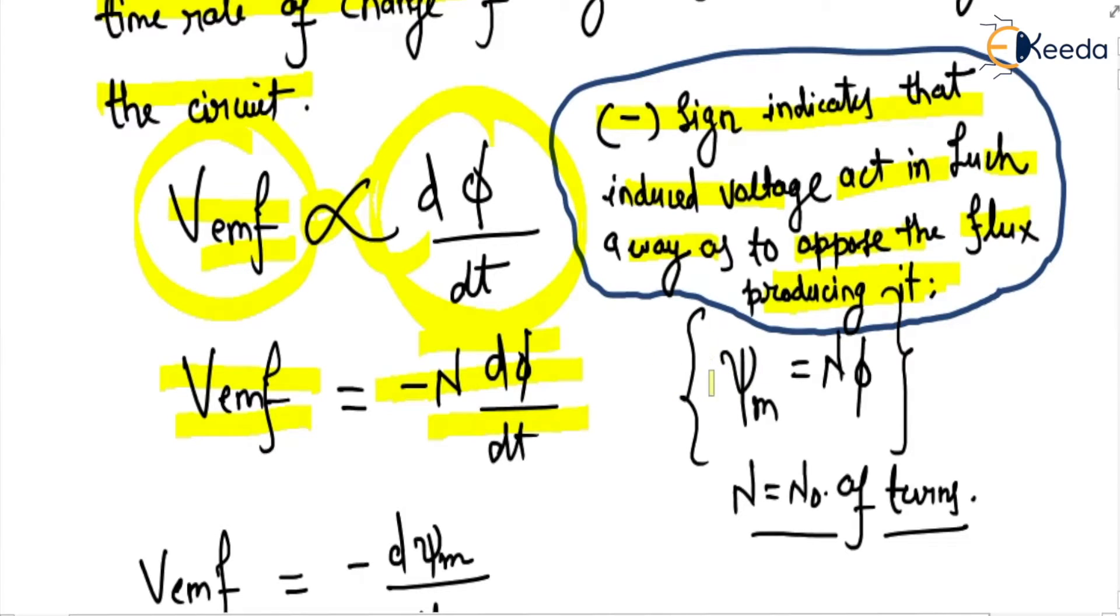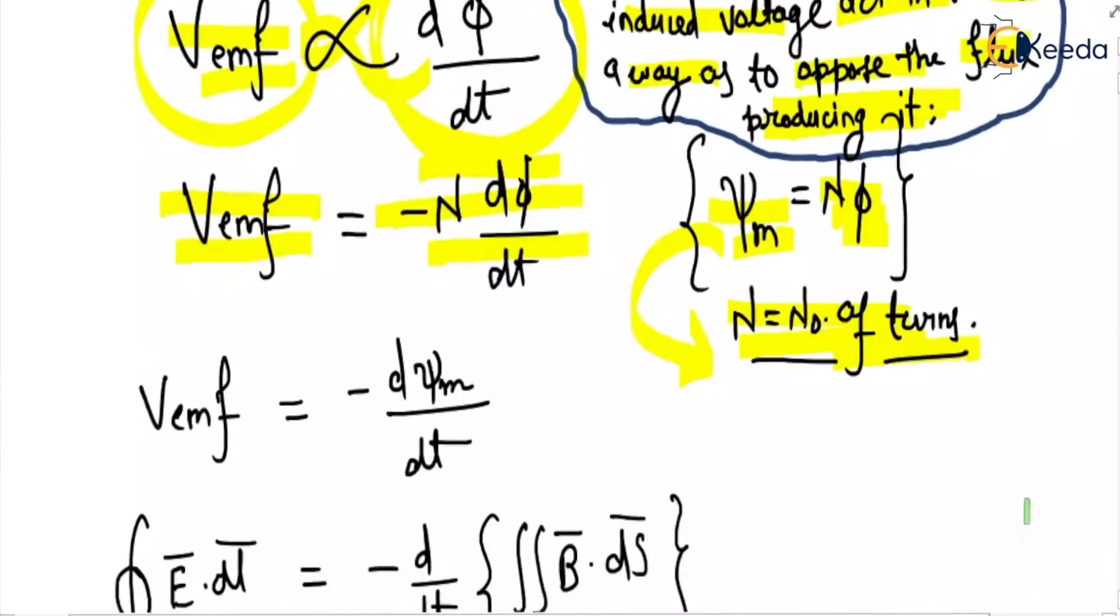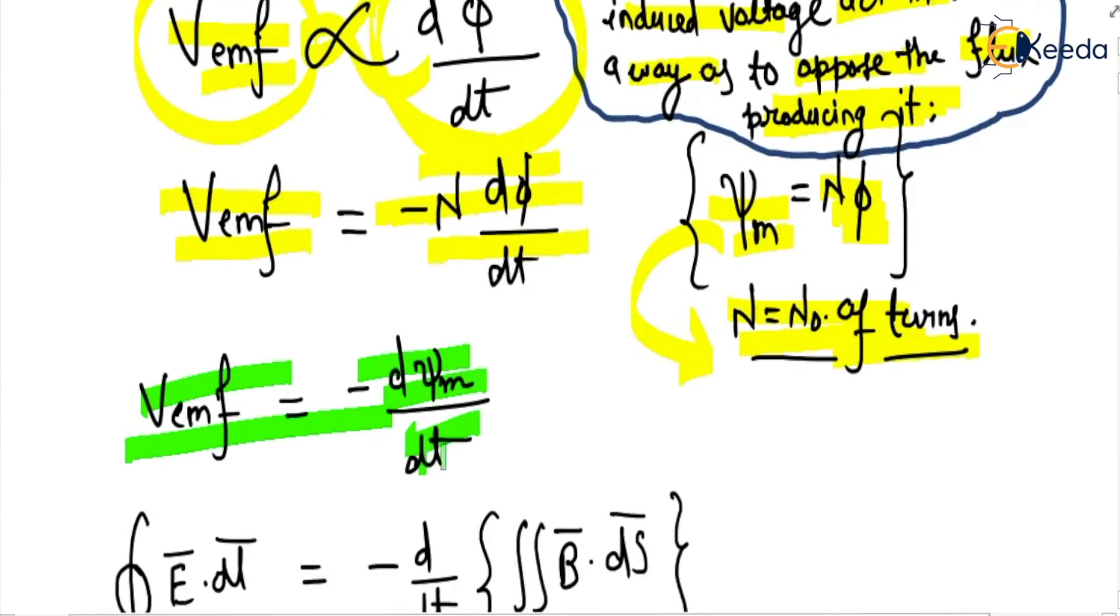Now here we write psi m, it is the total magnetic flux. It is equal to n into phi where phi is the flux in one coil and n is the total number of turns. So V emf is equal to minus d psi m over dt.